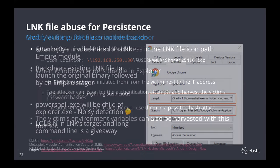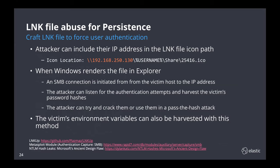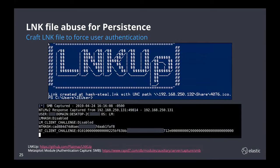Another technique available to attackers is to include an IP address or URI in the icon path of a link file. When Windows renders the link file in Explorer, it forces SMB authentication from the victim host to the attacker's IP address. One way to reduce the effectiveness of this is to block egress SMB traffic from your network, which will stop them from capturing hashes to crack or use in a pass-the-hash attack. But if the attacker is already inside the network and places a link file on a heavily used network share, it could still be quite effective at capturing hashes from thousands of users. Offensive tools like LinkUp make it easy to craft one of these link files, and then you can use the SMB authentication capture Metasploit module to collect the password hashes.